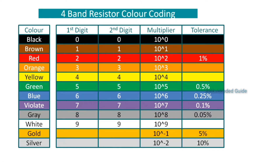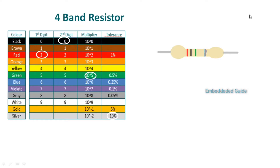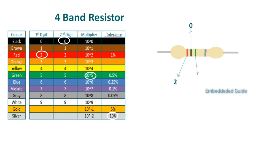Now we have to find the value of a 4-band resistor example. The first color band is red — the red color value is 2. The next color band is black — the black value is 0. The third color band is green, which represents the multiplier. The green multiplier value is 10 to the power of 5. The fourth color band is silver, which represents the tolerance value of 10%.